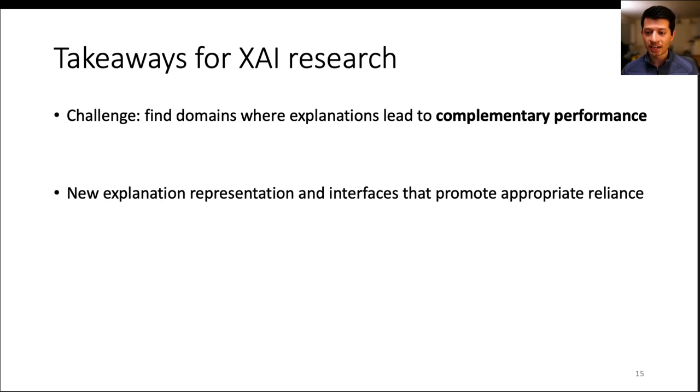For instance, recent work from Zana Buçinca at Harvard showed that cognitive forcing functions can decrease over-reliance but at the cost of user satisfaction. So future work should also develop explanations for optimizing multiple objectives such as speed or user satisfaction. Thanks.